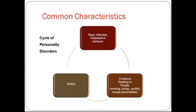Some common characteristics: they are unable to respond to changes and demands of life. This occurs in a cycle of inflexible and maladaptive response to stress, disability in working and loving, ability to evoke interpersonal conflict, and capacity to get under the skin of others. Persistent patterns of thought, emotion, and behavior are not experienced as uncomfortable by the individual — they feel their behavior pattern is normal. They have a difficult time dealing with other people and they lack insight.